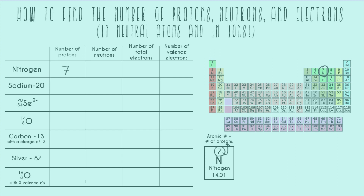Next we're asked how many neutrons does nitrogen have, and for this we actually have to put a question mark, because we aren't given enough information to know what this particular nitrogen atom has. Not every nitrogen atom has the same number of neutrons — that's based on something called the mass number. Based on the periodic table, the only mass information is the general atomic mass, which is the decimal number on the bottom. The atomic mass is just the average mass of that element, so it doesn't tell us how many neutrons this specific atom has.